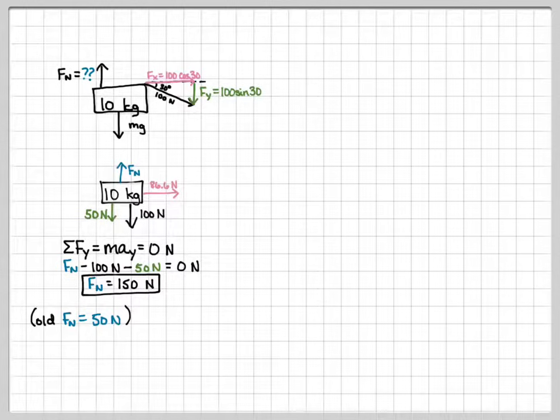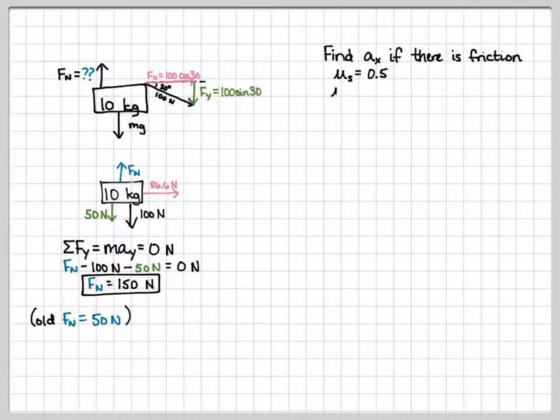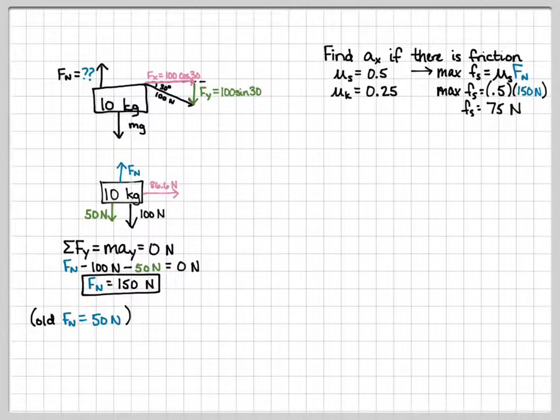So, let's find our acceleration if there's friction. So, the same conditions as before, the static friction coefficient is going to be 0.5. The kinetic friction coefficient is going to be 0.25. So, the max static friction this time is going to be 0.5 times 150. So, we get 75 newtons. So, we pulled with 86.6 and the max static friction is going to be 75. So, we got closer to not overcoming static friction, but we're still going to win. It's just a little closer now.